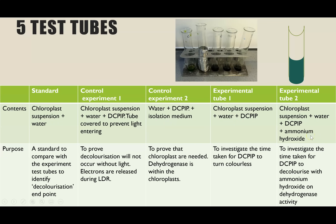Experimental tube two is to investigate what effect adding ammonium hydroxide has. It contains the chloroplast suspension, water, and DCPIP — but the difference from experimental tube one is that we also add ammonium hydroxide. I'm measuring the time taken for the DCPIP to decolorize with the ammonium hydroxide present.